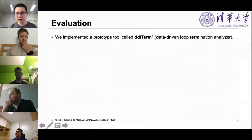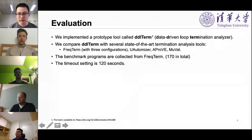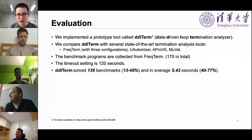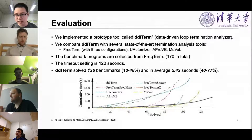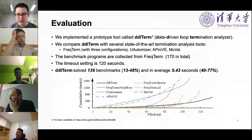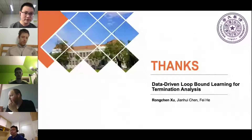Based on our approach, we implemented a prototype tool called DDR10 and compared it with four state-of-the-art termination analysis tools. DDR10 solves 136 benchmarks with an average solving time of 5.43 seconds. In cumulative time, DDR10 extends further in solving time while growing slowly — indicating good scalability. That concludes my presentation, thank you for listening.